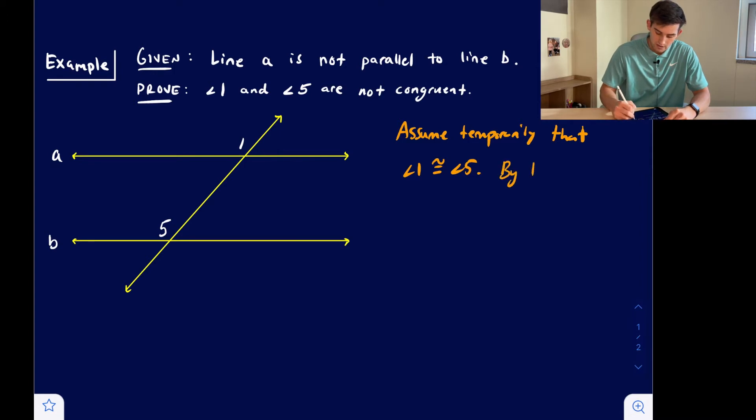So now we can say by the converse of the corresponding angles theorem, lines A and B should be parallel.